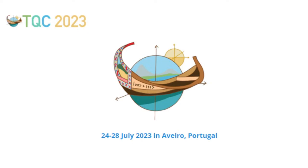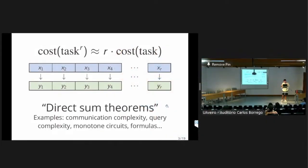The common intuition is that the cost should scale basically as r times the cost of the task. And indeed, there are many computational settings in which you can actually rigorously prove that something like this holds. These are usually known as direct sum theorems. Some examples include most variants of communication complexity and query complexity, and also some things like monotone circuit size and formula size.